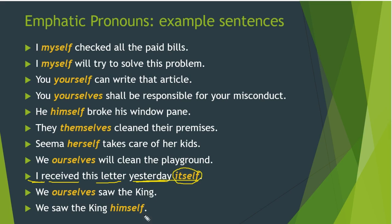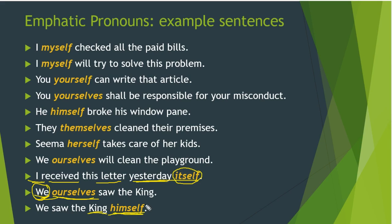'We ourselves saw the king' — we ourselves saw the king. Who saw? We ourselves. The stress is on the subject 'we' — we personally saw the king, not heard from someone else. So 'ourselves' is emphatic here. In the next sentence, only the position changes: 'We saw the king himself' — here the stress is on 'king'. We saw the king himself — the king in person, not a minister or family member.